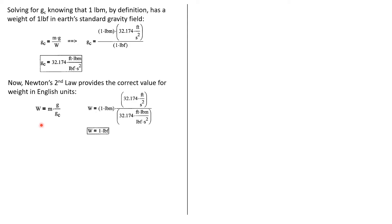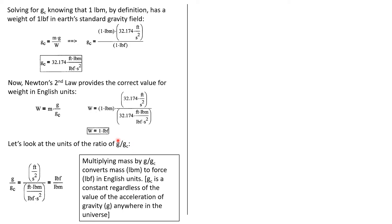Let's go back to Newton's second law where we've added the g_c constant and see what it provides. If we want the weight of one pound-mass, we multiply by g and divide by g_c, and this simplifies to a weight of one pound-force — exactly what we needed. Looking more closely at the ratio g over g_c: the acceleration of gravity has units of ft/s², and g_c has units of ft·lbm/(lbf·s²). These simplify to pound-force per pound-mass, so on the surface of the earth g/g_c has a value of one pound-force per pound-mass.